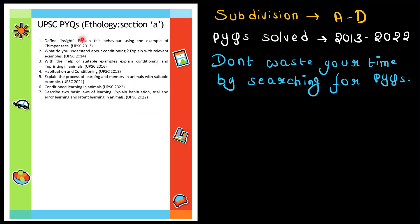Next point I should mention is the PYQs, previous year questions. Ethology has total four subdivisions A to D. I have finished a subdivision, suppose A, then I have mentioned all the PYQs from 2013 to 2022, just like this.